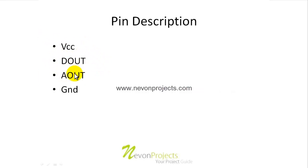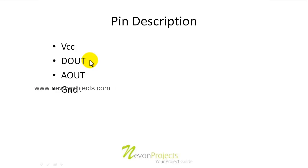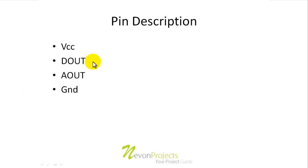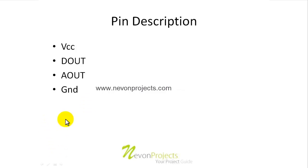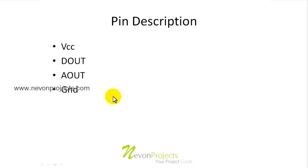The difference between D out and A out is that D out goes high or low based on a threshold. If the alcohol content is above that threshold, D out becomes high; otherwise it stays low for allowed alcohol content. The A out gives analog voltage levels for all levels of alcohol, so we can set a particular level that is allowed or not, as per the user's needs. The fourth pin is ground, and VCC and ground together provide power supply to the sensor.